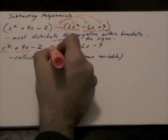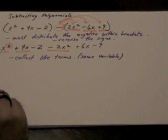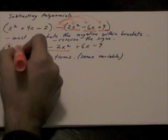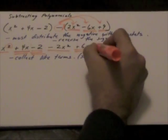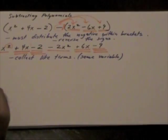So this x squared is a like term with negative 2x squared. This positive 4x is a like term with positive 6x. And this negative 2 is a like term with negative 9.